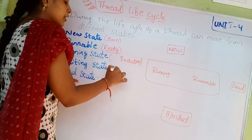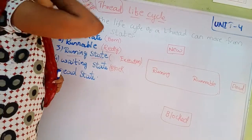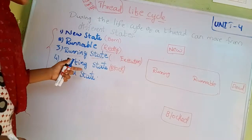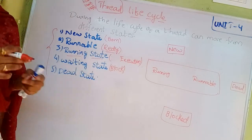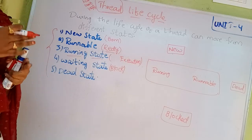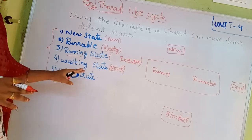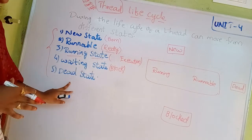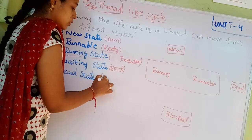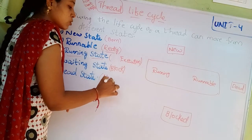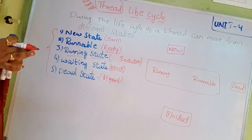Waiting state means if the thread is blocked, it is in a blocking state. That is when suspend, wait, or sleep methods are called. When that time is complete, the thread exits the block state. After that comes the dead state, where the thread is stopped.